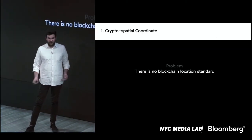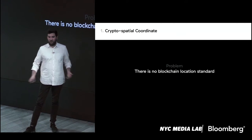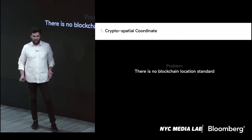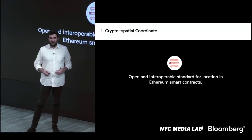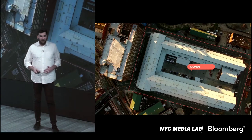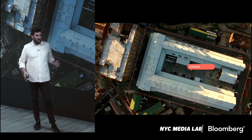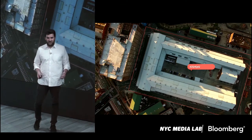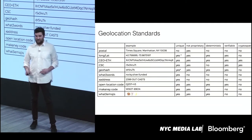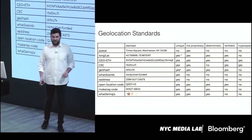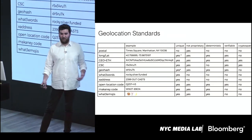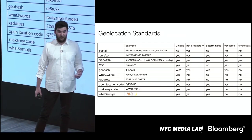The first element, the crypto spatial coordinate — the problem is there are no location standards whatsoever in blockchain, so we're the first to bring it there. We want this to be an open and interoperable standard for smart contracts. For example, we want to have a contract that represents a place and be able to encode its location in a simple and human readable way. Most people think location is a solved problem because we all have postal addresses, but there are billions of people in the world who don't have any address whatsoever, and billions more square meters of land that don't have a postal address either.